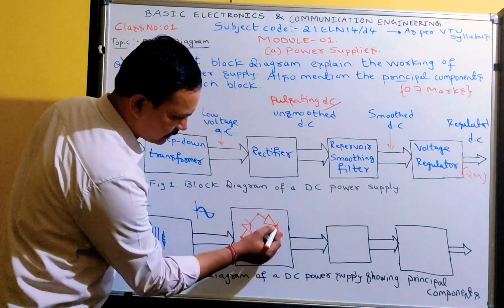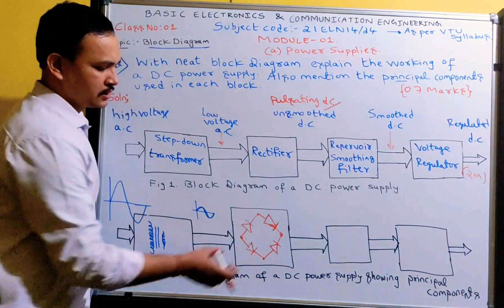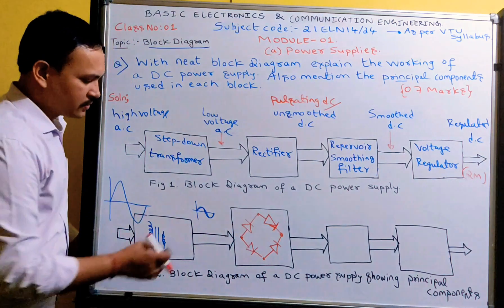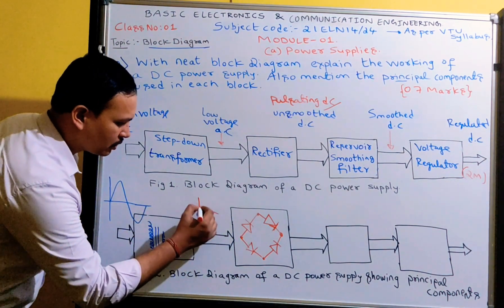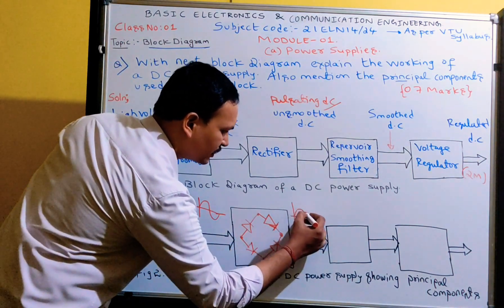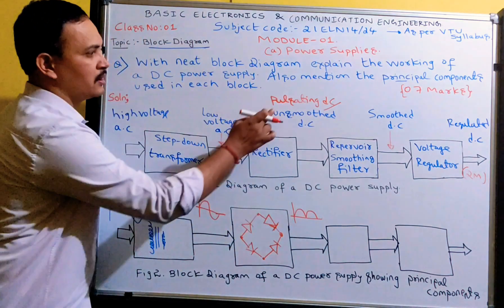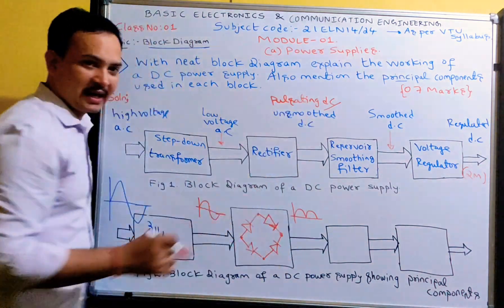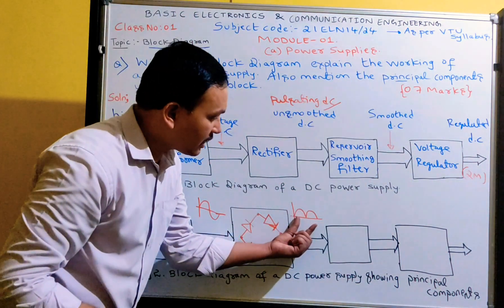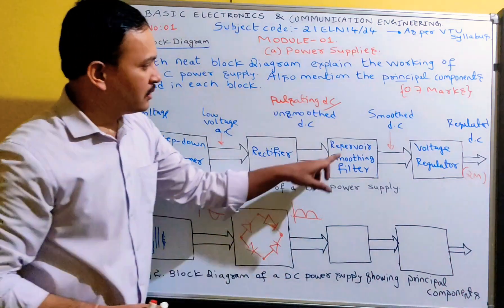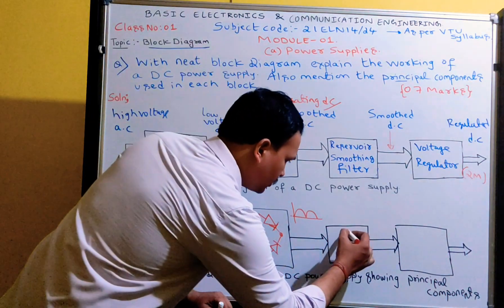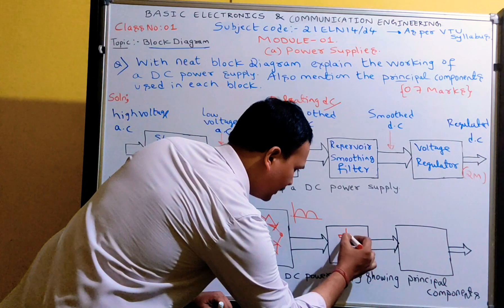This configuration is called a bridge rectifier circuit — the principal component in the rectifier block. The input to the rectifier is low voltage AC, and the output you get is unsmoothed DC. The waveform of unsmoothed DC looks like this — it still has a ripple or AC component present. This AC component is eliminated by the reservoir or smoothing filter circuit. The principal component in the filter is a capacitor.